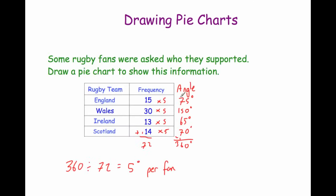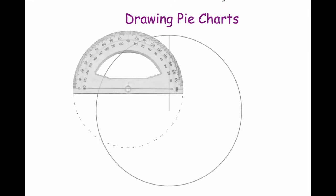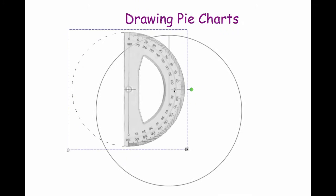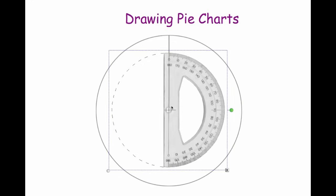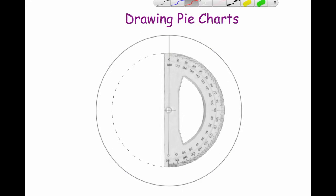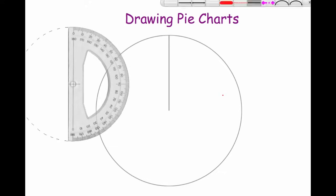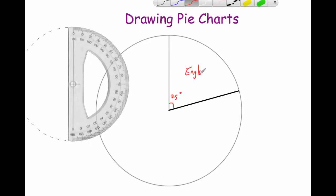For England we need to draw a 75-degree angle. Get your protractor and line it up with the line that's been drawn. Put the cross at the centre of the protractor on top of where the line ends — the centre of the circle. Make sure you've got your zero at the top. Go around to 75 degrees. Move the protractor, then use a pencil and ruler to draw a line from the centre through that point to the edge of the circle. Label it 75 degrees and England.